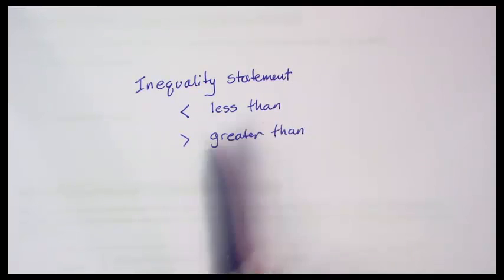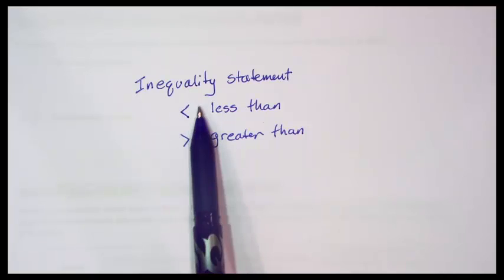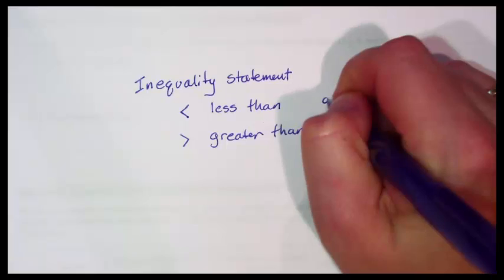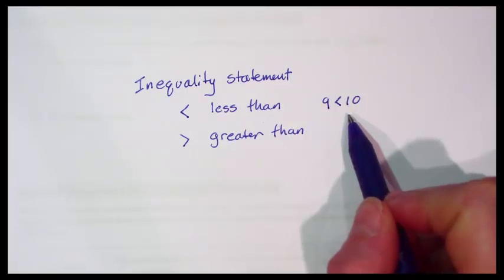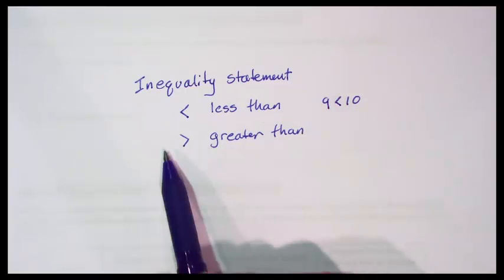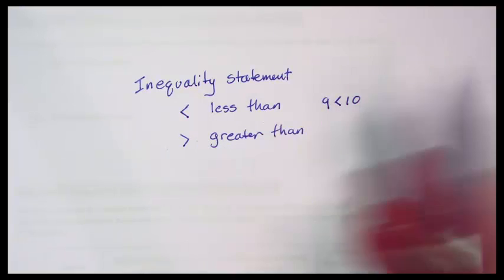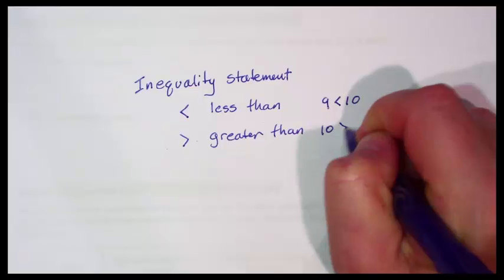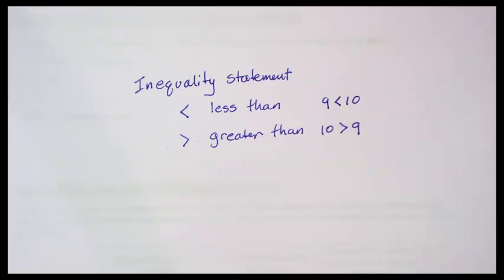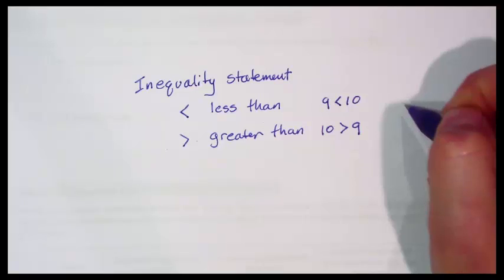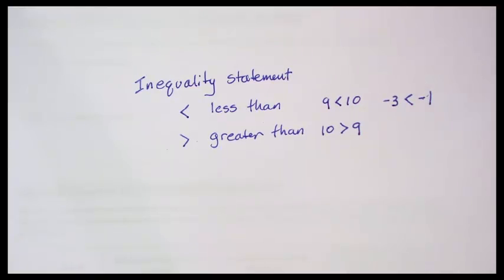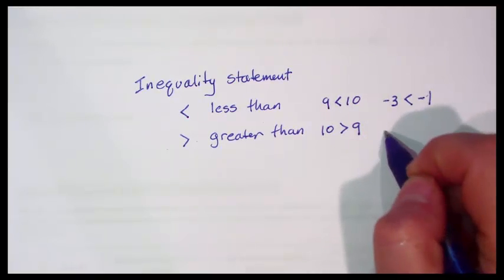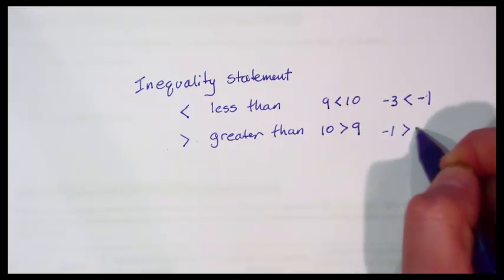When we use the less than symbol, it means the number on the left is smaller than the number on the right. So if I say that 9 is less than 10, that would be a true inequality statement. If I use the greater than symbol, it means the number on the left is bigger than the number on the right, so I can say that 10 is greater than 9. I can use them with positive or negative numbers — negative 3 is less than negative 1, and negative 1 is greater than negative 3.